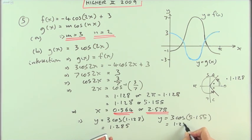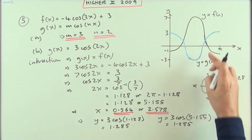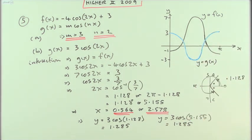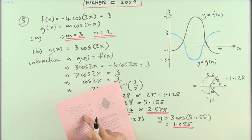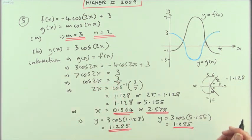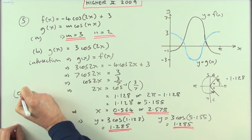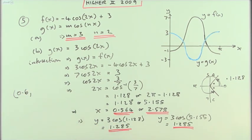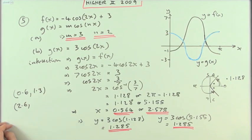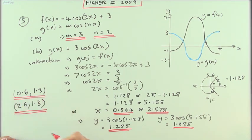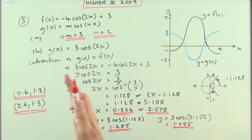Obviously both y-values must be the same answer — 1.285 — because it's a symmetrical graph; they're at the same height. That handily checks that part of the working. Now stating the coordinates to one decimal place: the first point of intersection is (0.6, 1.3) and the second is (2.6, 1.3). Of course, when working out the answers don't shorten to one decimal place early — keep the accuracy going until the end, then round off.